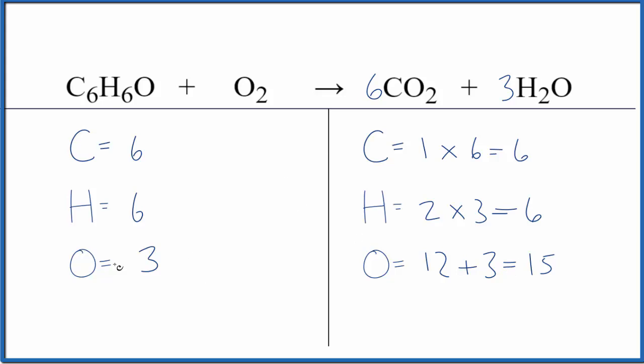Everything is balanced except we have three oxygens in the reactants and fifteen in the products. Here's the way to think about this. We know that we have one oxygen right here. So one plus some number is going to equal fifteen.